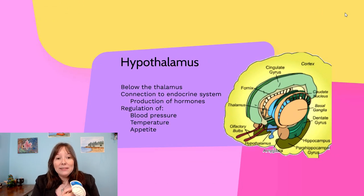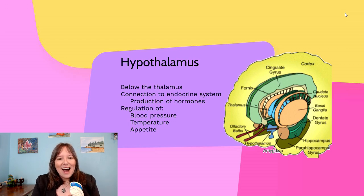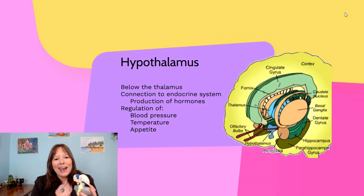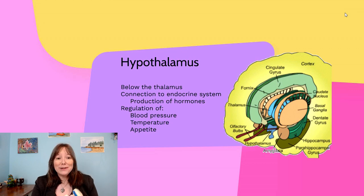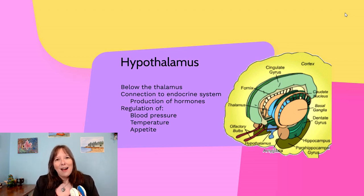Just below the thalamus is the hypothalamus — meaning 'lower thalamus.' It's connected to the endocrine system and helps with regulation of blood pressure, temperature, and appetite — everything we need to keep in balance. It also helps with the production of hormones through our endocrine system.